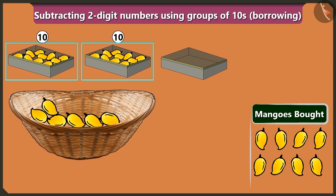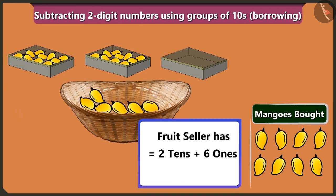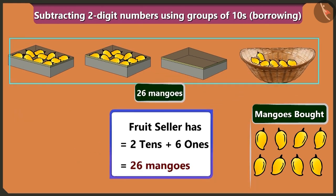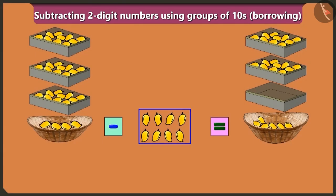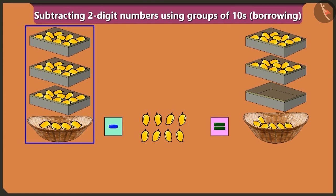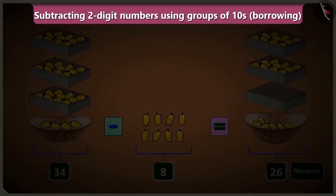There are two boxes of ten mangoes each, and there are one, two, three, four, five and six mangoes in the basket. So the fruit seller would have two tens and six ones, means twenty-six mangoes left. We subtracted eight mangoes from thirty-four mangoes, so now there are twenty-six mangoes. It means if we subtract eight from thirty-four, we would have twenty-six mangoes left.